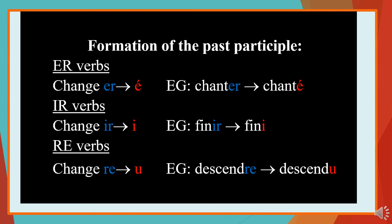The simple rule of thumb for regular verbs belonging to the three groups is: for -er verbs, change the ending to -é with an accent aigu — so chanter (to sing) becomes chanté. For -ir verbs, remove the r, so finir (to finish) becomes fini. For -re verbs, change the ending to -u — so descendre becomes descendu. You can apply these three rules to all verbs which fall into these three families.